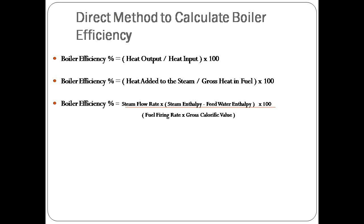Heat input we are giving heat in the boiler in the form of fuel, so the gross heat of fuel is heat input to the boiler, multiplied by 100. How we calculate heat added to the steam? It's very simple.